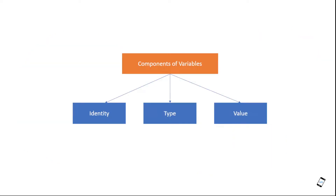If you want to write a variable, there are components of a variable: identity, type, and value.